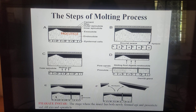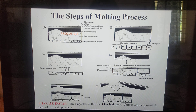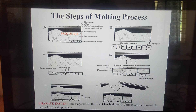The stage where the insect has both the newly formed epi- and procuticle as well as the old exo- and epicuticle is known as the pharate instar. After digestion of the endocuticle, the cuticulin layer, polyphenol layer, cement layer, and wax layer are formed from the epicuticle. The cement layer, also called tectocuticle — the outermost layer — is formed from the dermal glands.